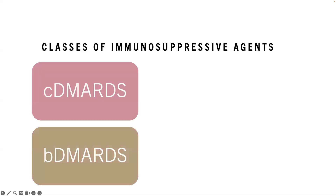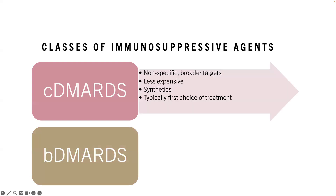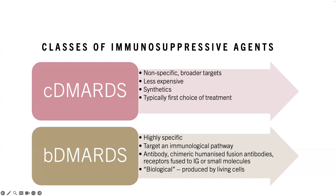Conventional DMARDs and biological DMARDs differ in that conventional DMARDs are generally nonspecific with broader targets, cheaper, synthetically made, and are typically the first choice of treatment for autoimmune disease. Biological DMARDs by comparison are highly specific, generally targeting a specific immunological pathway. They are generally antibodies or chimeric antibodies — mouse-human fusion antibodies — or receptors fused to immunoglobulin or small molecules. Originally they were called biological because they're produced by living cells, though this definition is not all that useful.